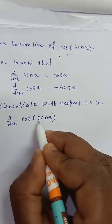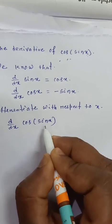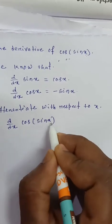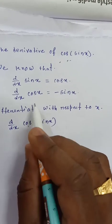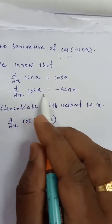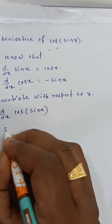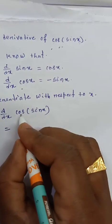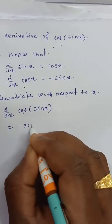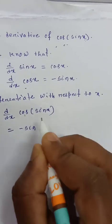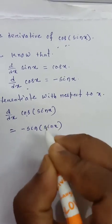Here, we treat sin x as a single function — suppose sin x is like a variable u. So the derivative of cos is minus sin. Therefore we write minus sin, where x is replaced by sin x, giving us minus sin(sin x).